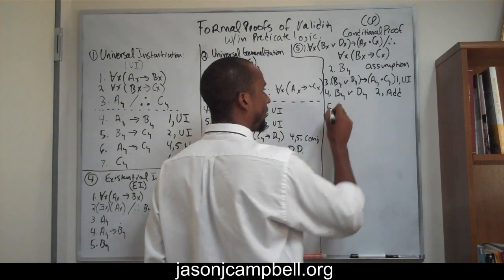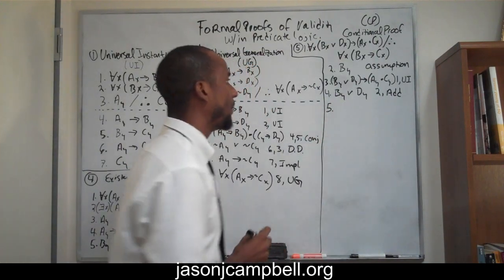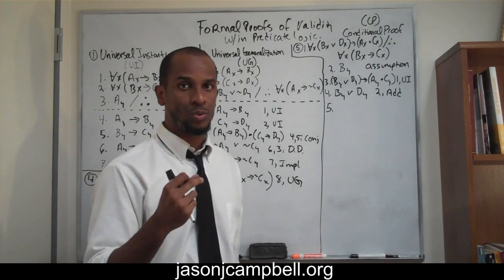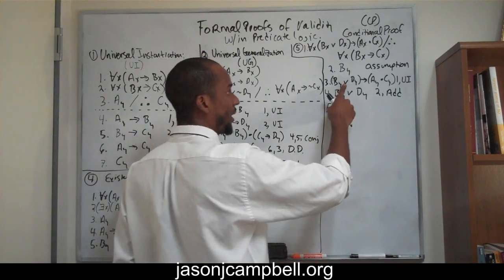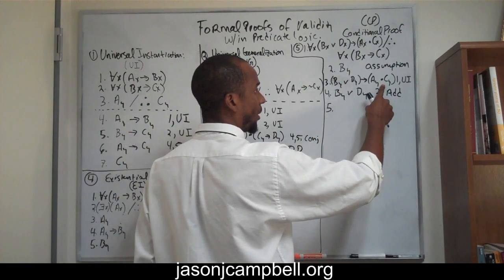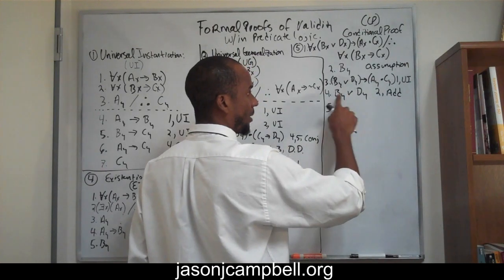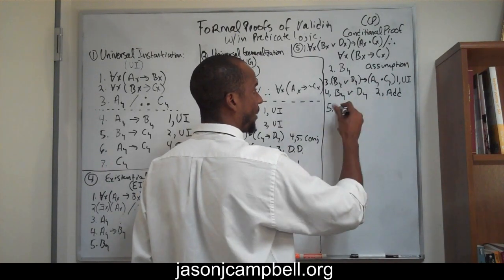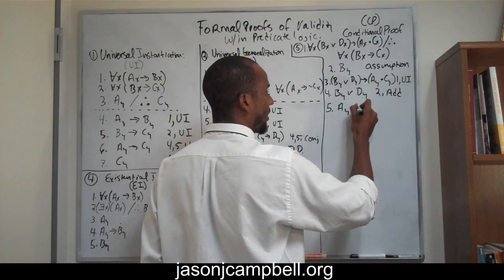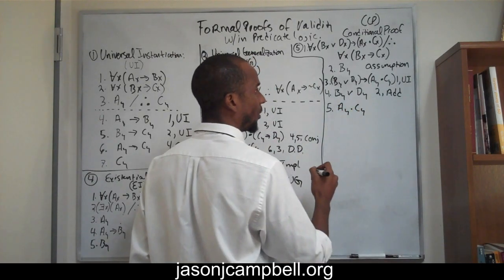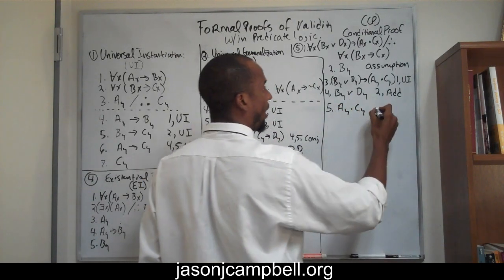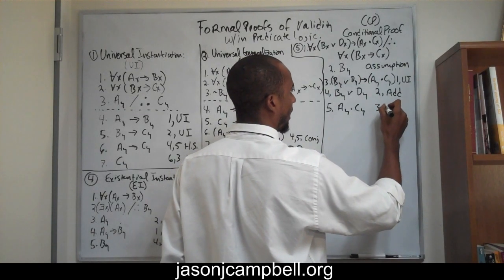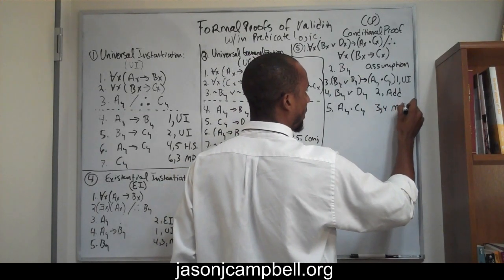On line five, we recognize we can do modus ponens. We have if P then Q, and P — that's exactly the same form — so we get A,Y and C,Y by modus ponens on lines three and four.